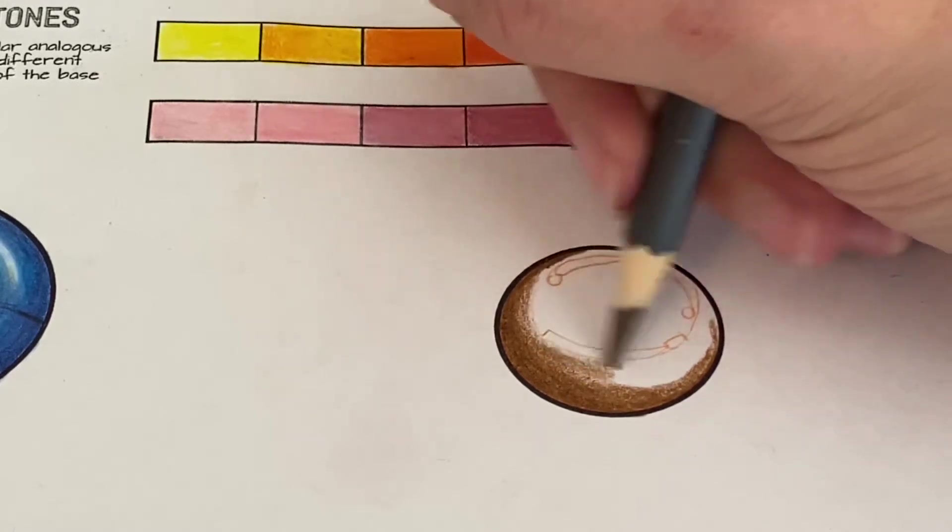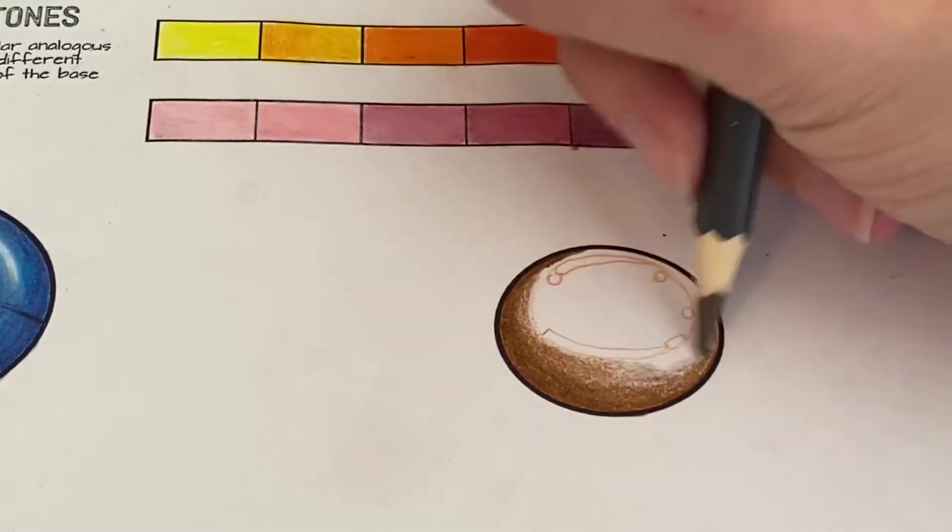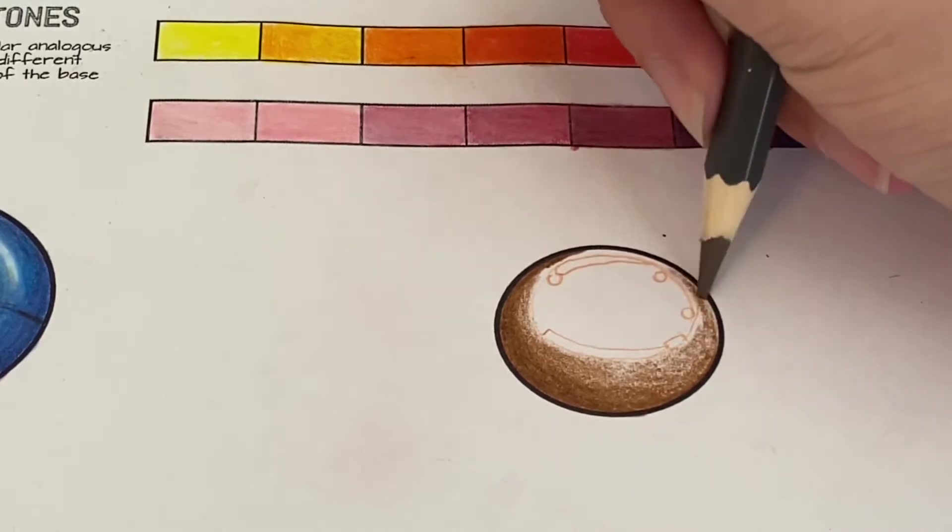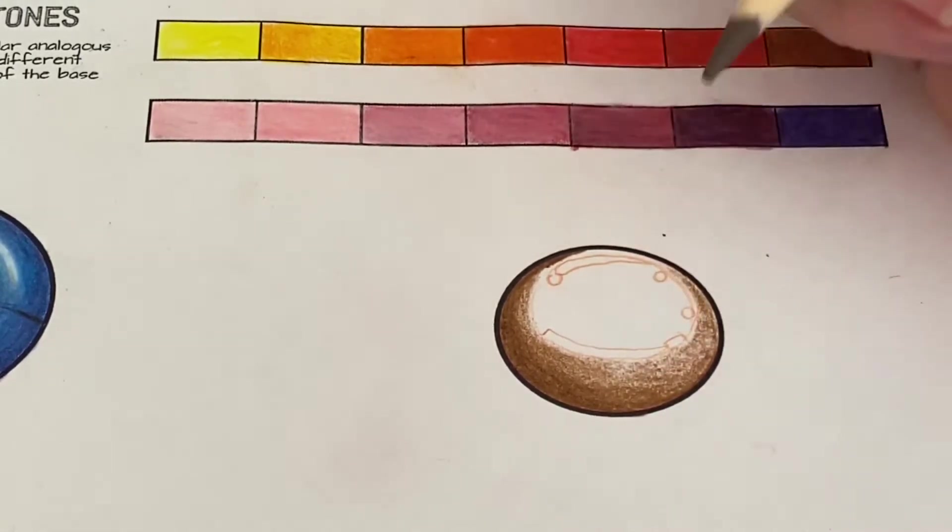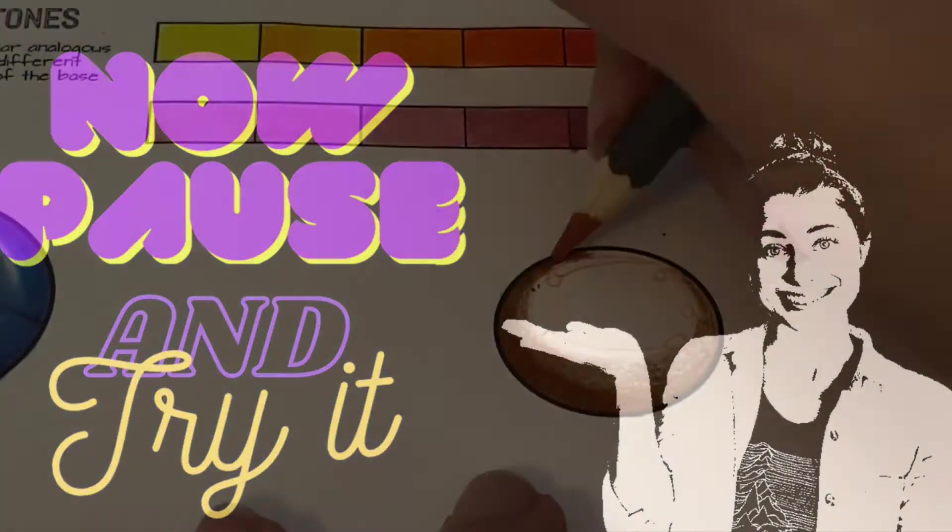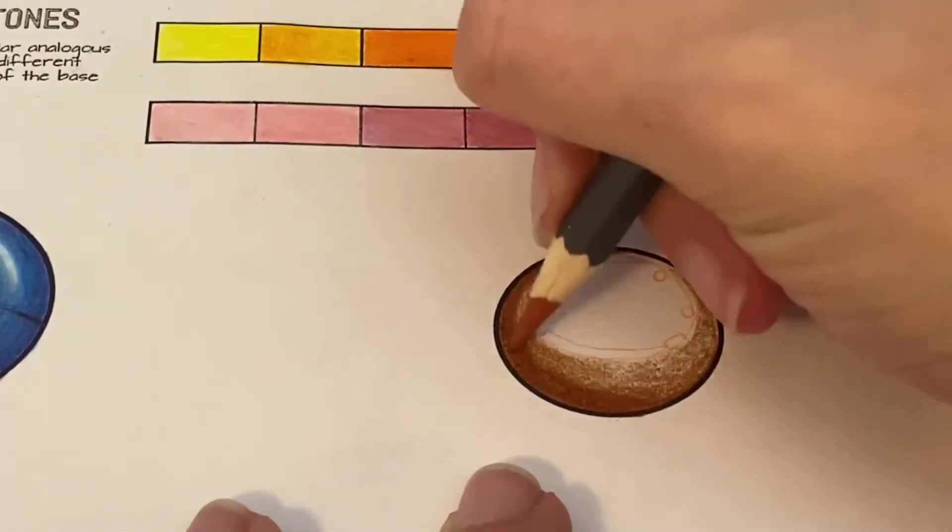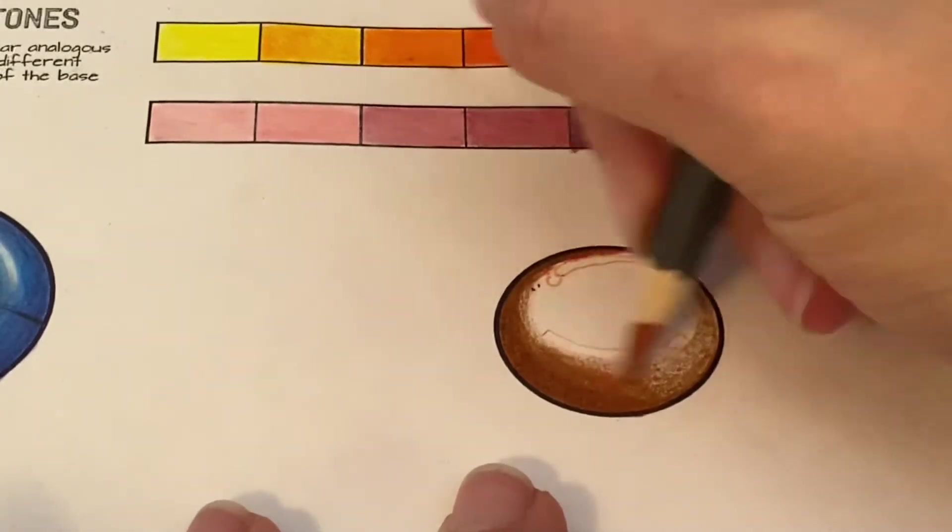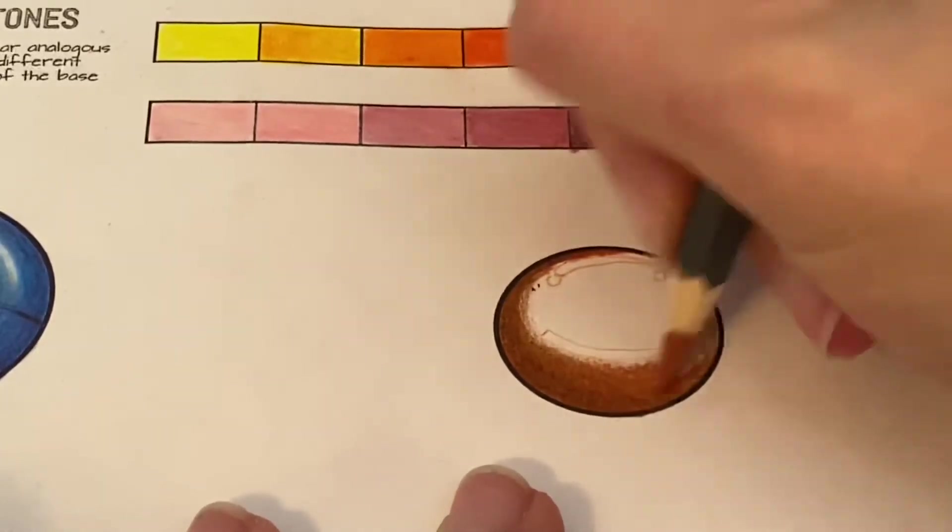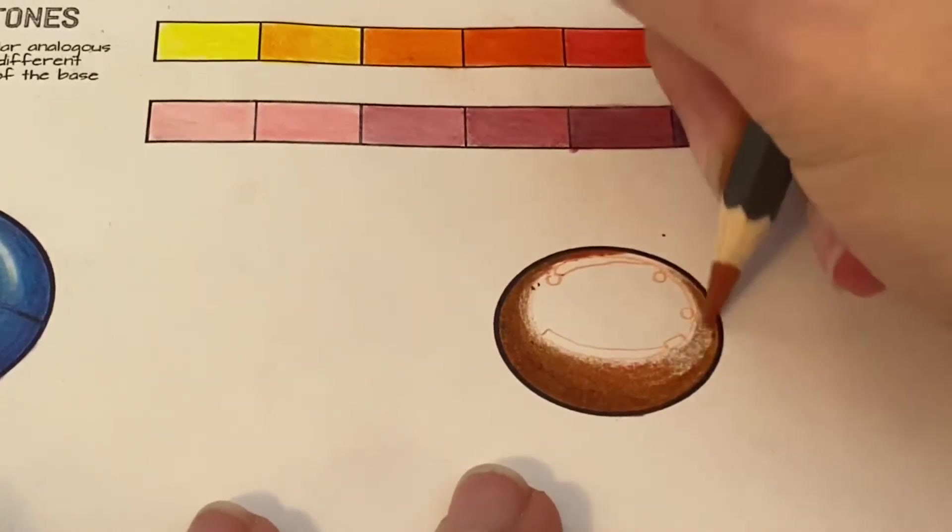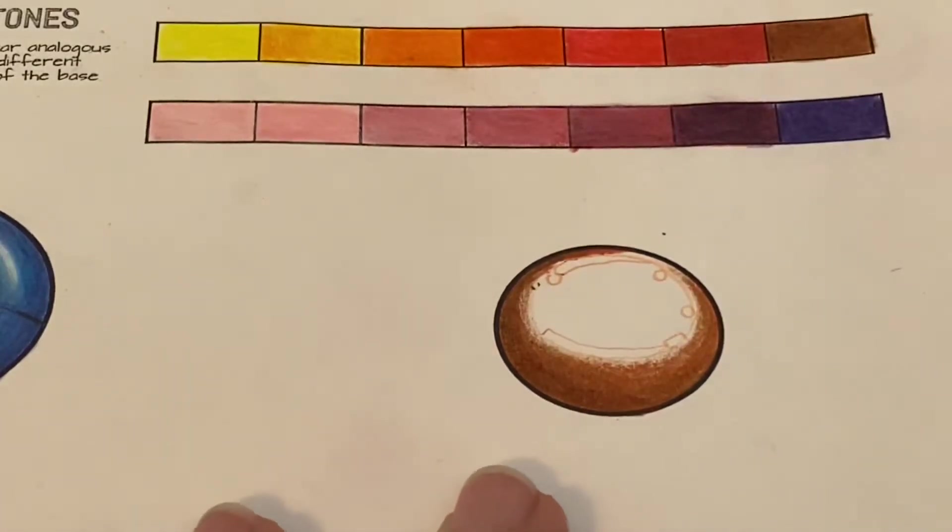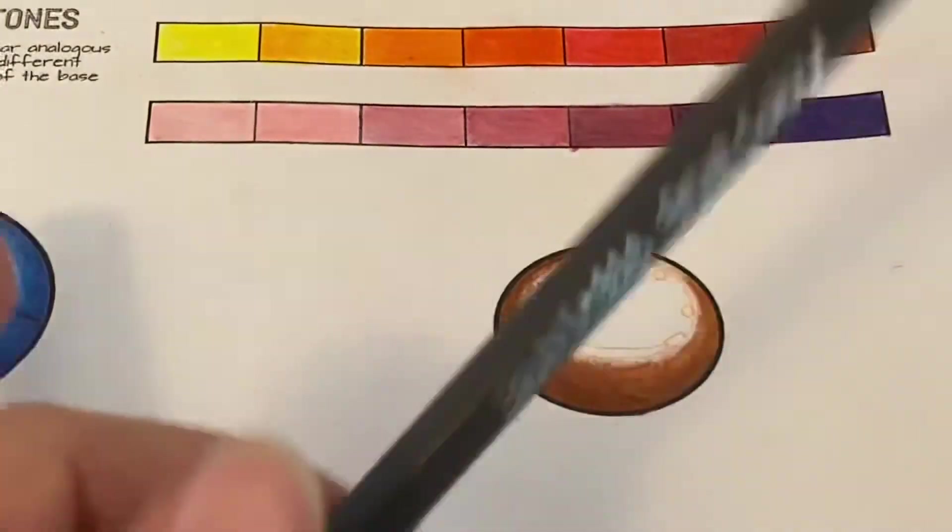Once I've filled in a crescent moon shape with that darkest value, I'm going to go all the way around the edge of that value and help it fade into the white. Essentially I'm making a very small value scale here, fading from dark to medium all the way out to white. To continue, we're going to take the color that was directly next to our darkest color. I'm going to take that next color and varnish over the entire section I just filled in with my darkest value, varnishing all the way out into that space where I was fading. I'm trying to help those colors blend together.